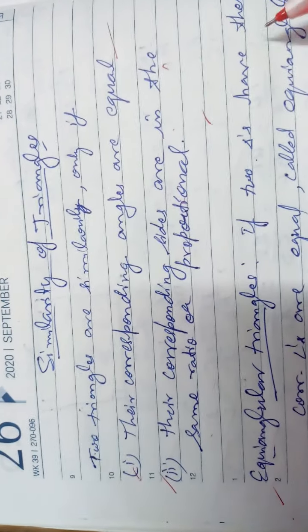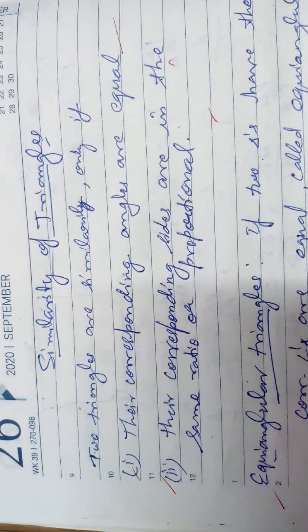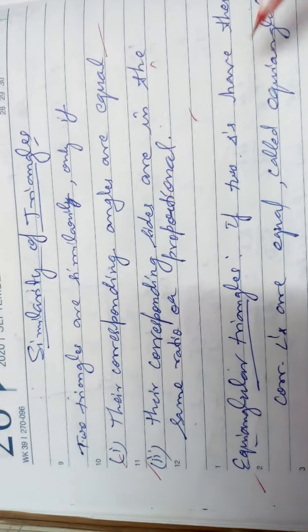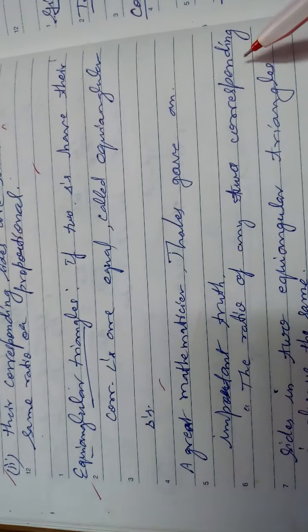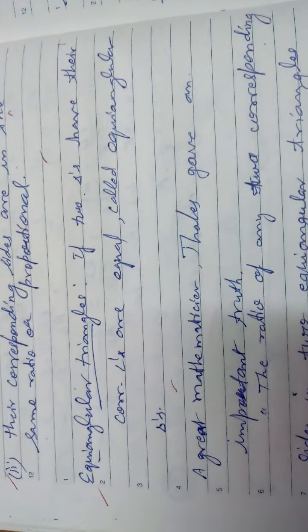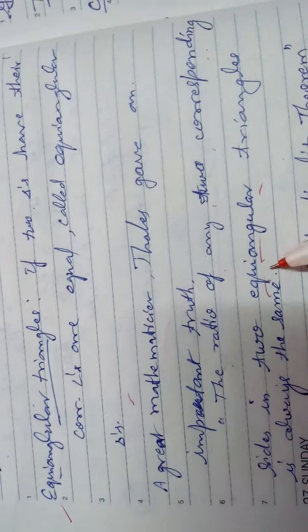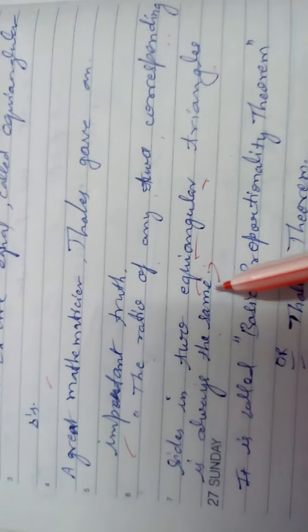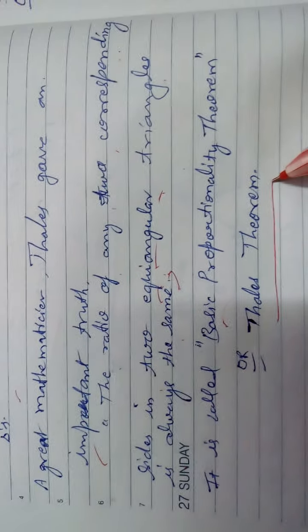Equiangular triangles means if two triangles have their corresponding angles equal, then they are called equiangular triangles. The great mathematician Thales gave the important truth that the ratio of any two corresponding sides of two equiangular triangles is always the same.